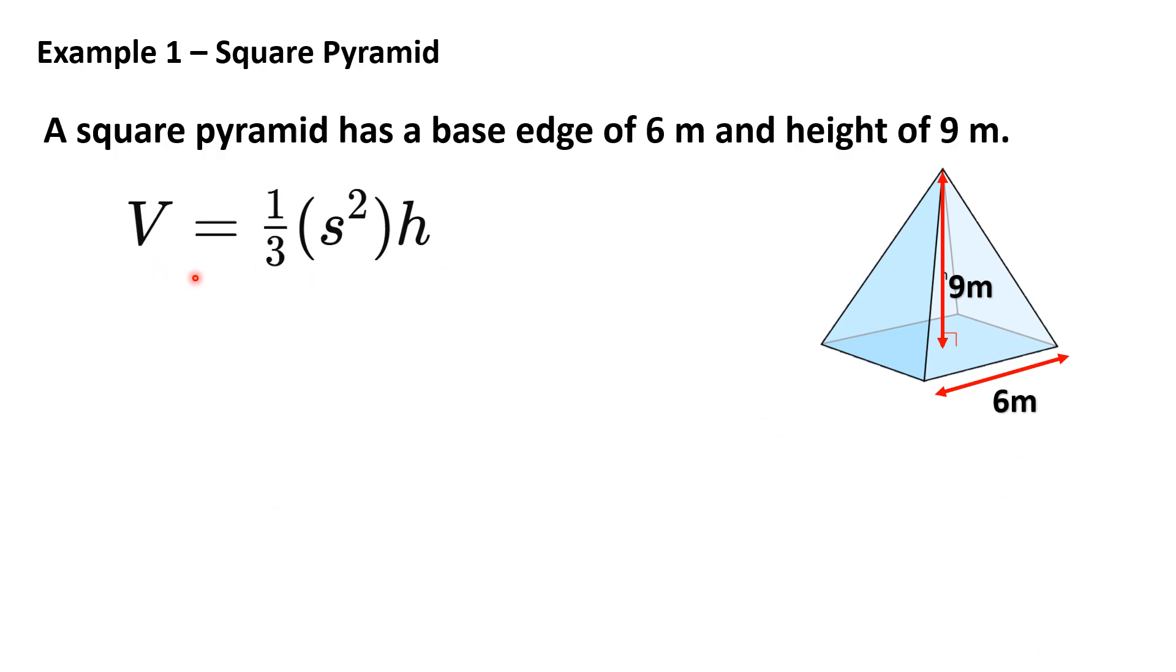If the formula is V equals one third times s squared times h, therefore we're going to substitute the value. S squared to six squared. Since square ito, so lahat ng sides na ito, here at saka dito is six. So therefore, six squared.